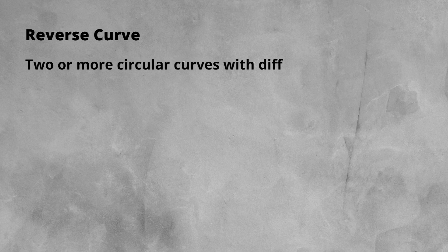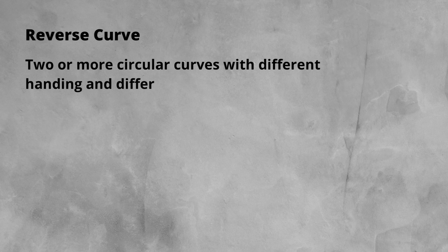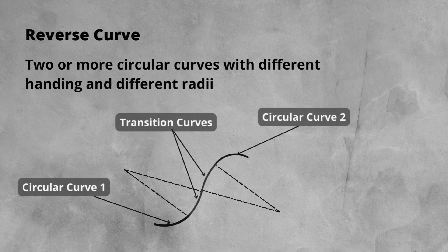Lastly, we have the reverse curve. A reverse curve is similar to a compound curve, but the curves have different handing, therefore reversing the direction in which the train travels. They can look like an S when drawn out. There are also transitions too, in fact.